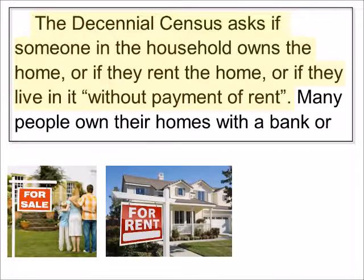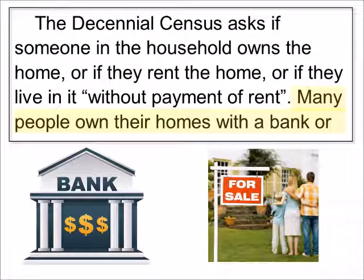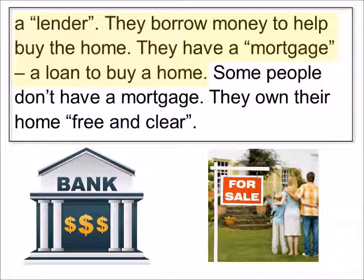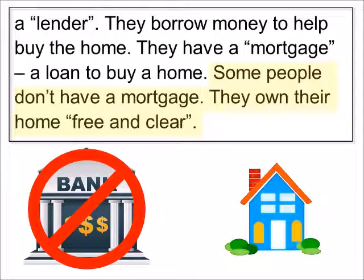The decennial census asks if someone in the household owns the home, or if they rent the home, or if they live in it without payment of rent. Many people own their own homes with a bank or a lender. They borrow money to help buy the home — they have a mortgage, a loan to buy a home. Some people don't have a mortgage; they own their own home free and clear.